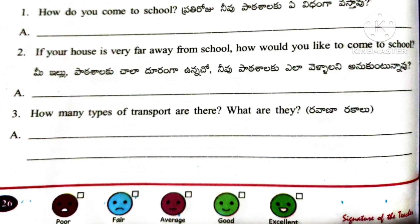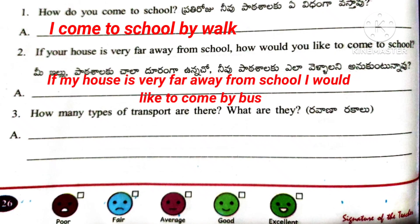Question number 1: How do you come to school? Answer: I come to school by walk. Question number 2: If your house is very far away from school, how would you like to come to school? Answer: If my house is very far away from school, I would like to come by bus.